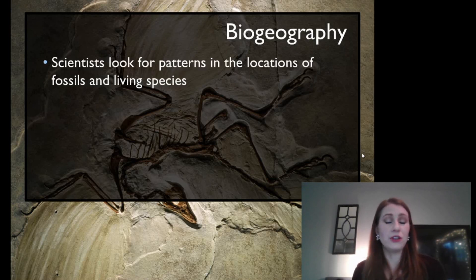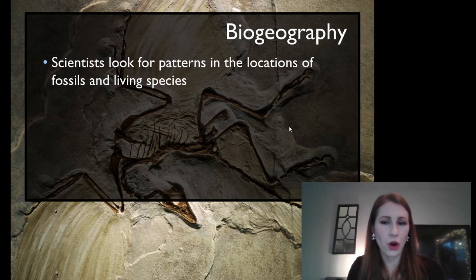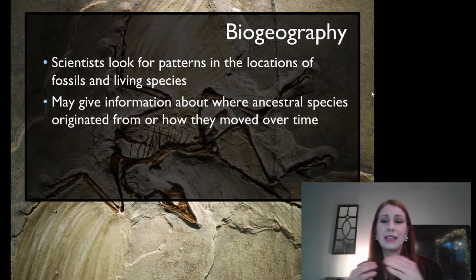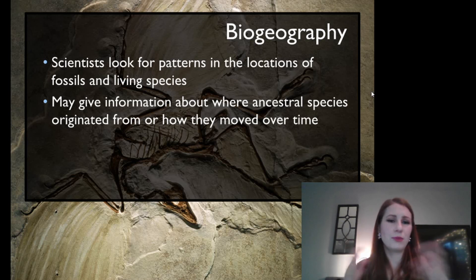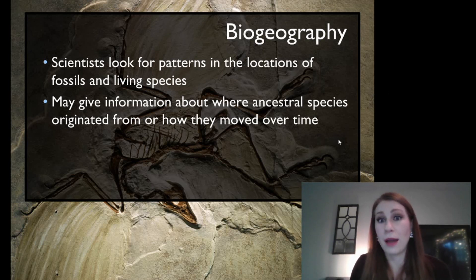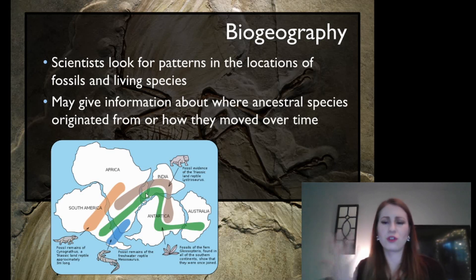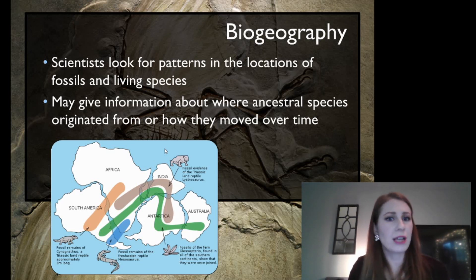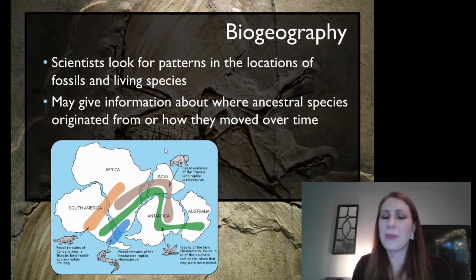Biogeography is something we can use to help look for patterns in the locations of fossils and living species. We're looking at where these fossils occur location-wise on the globe. They can give us information about where ancestral species may have come from or how they may have traveled over time. Species don't just stay in one place — many animals tend to migrate, whether they need new food sources or have to move because of natural disasters. We have fossil evidence of specific creatures on different continents, which is kind of crazy because they're separated by oceans and some are not water-dwelling species.